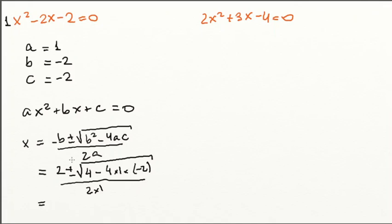So, let's take a look at this root here. We have 4 minus 4 times 1 times negative 2, that's 8 plus 4, that's 12. So, 2 plus or minus root of 12 over 2.